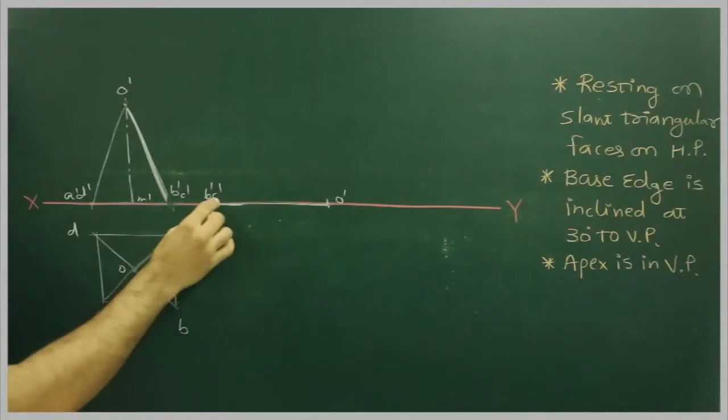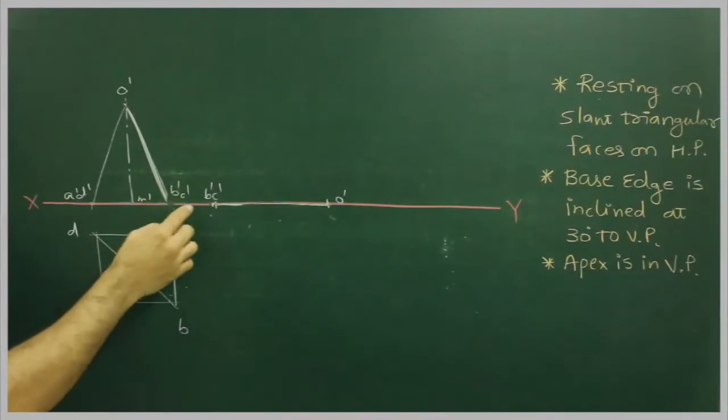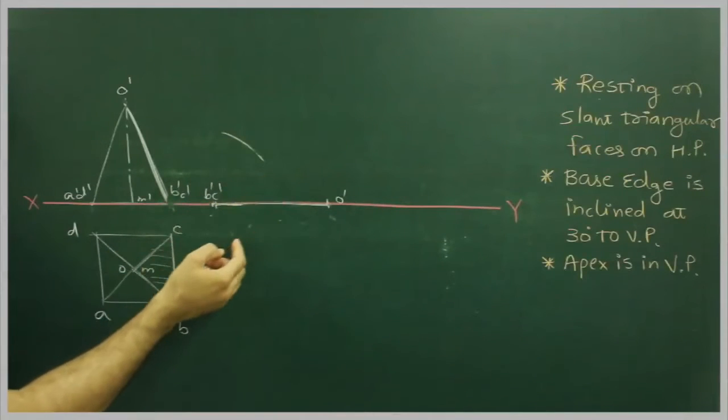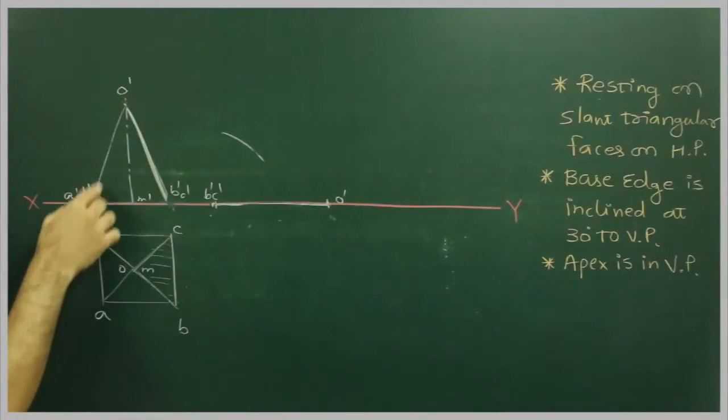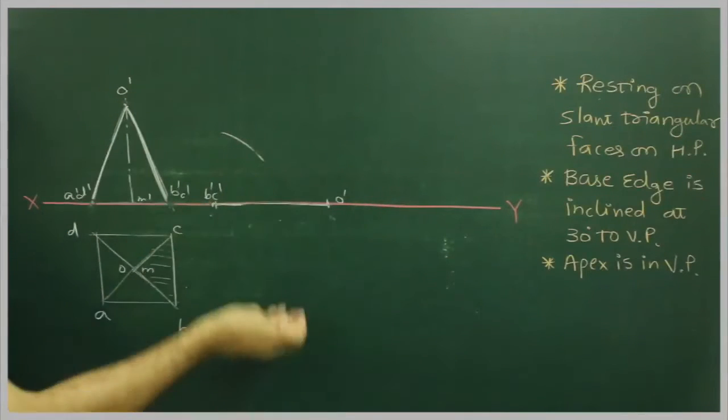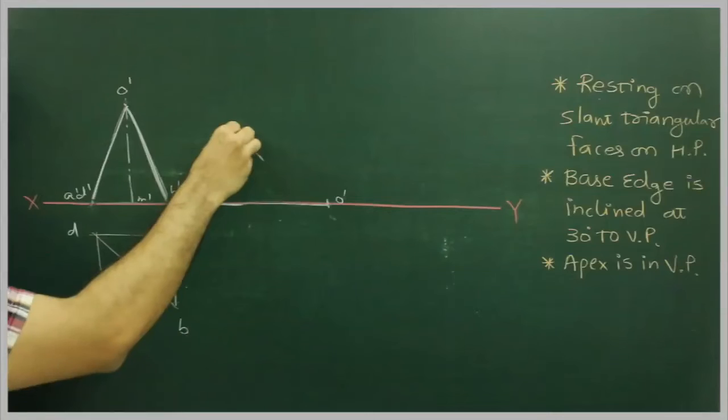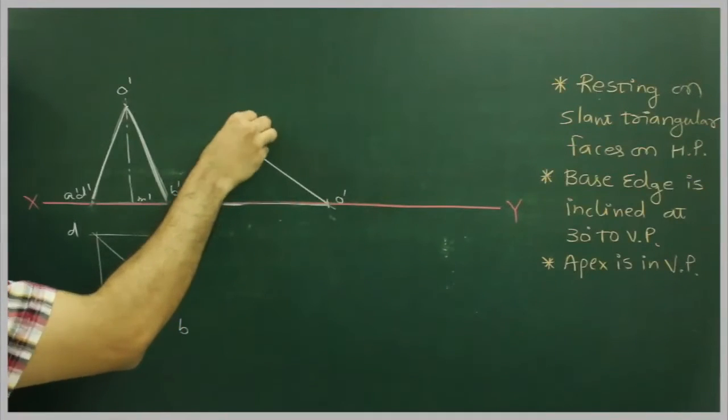So first we will draw this - first you mark B'C' to O', then take B'C' to A'D', cut here. Take O' to A'D' in your compass, cut from here.